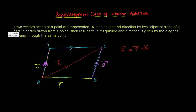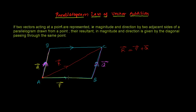Now if you see from the triangle law of vector addition point of view, just take a look at triangle A, B, C. In this triangle, the triangle law says that if two vectors are represented by two sides of a triangle taken in the same order — tail to head and again tail to head, same order — then the resultant is represented in magnitude and direction by the third side of the triangle taken in opposite order.